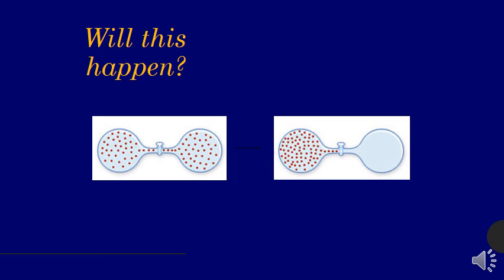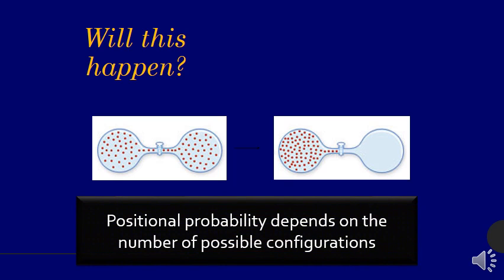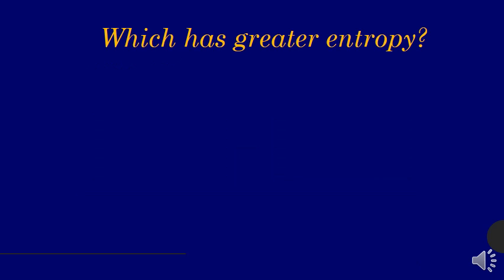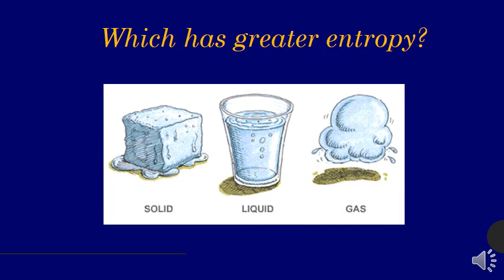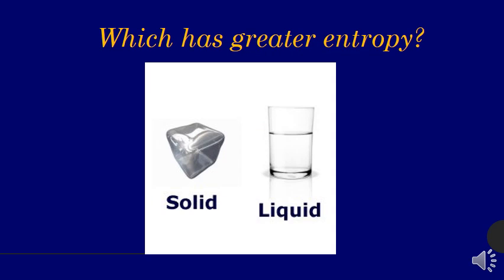So you know that if we open the stopcock here, the balls aren't going to move all the way over there. No, we know that's not going to happen. We would have to actually add energy to the system to get that to happen. It's just not going to happen that way. So which has greater entropy, solid, liquid, or gaseous water? And the answer is the liquid water. It has more positional entropy.